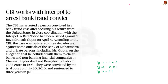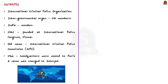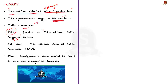The CBI arrested a bank fraud convict with the help of Interpol, against whom a red notice had been issued. In this context, let us learn about Interpol. Interpol stands for International Criminal Police Organization. It is an intergovernmental organization with 195 member countries, including India. Founded in 1923 at the International Police Congress in Vienna, it was originally called the International Criminal Police Commission. In 1946, its headquarters were moved to Paris and it was renamed Interpol.